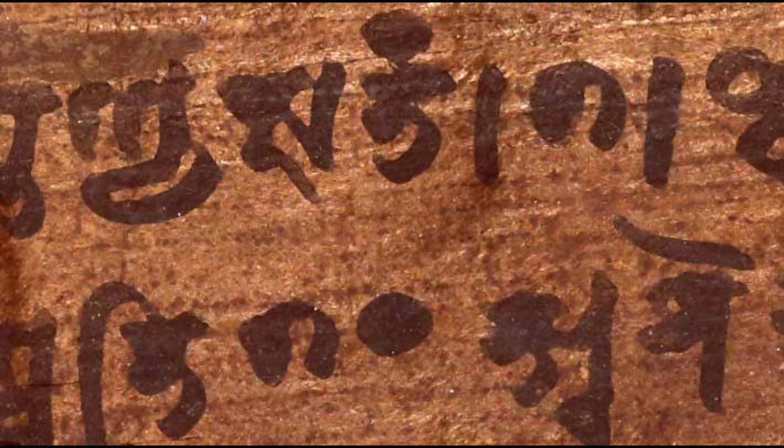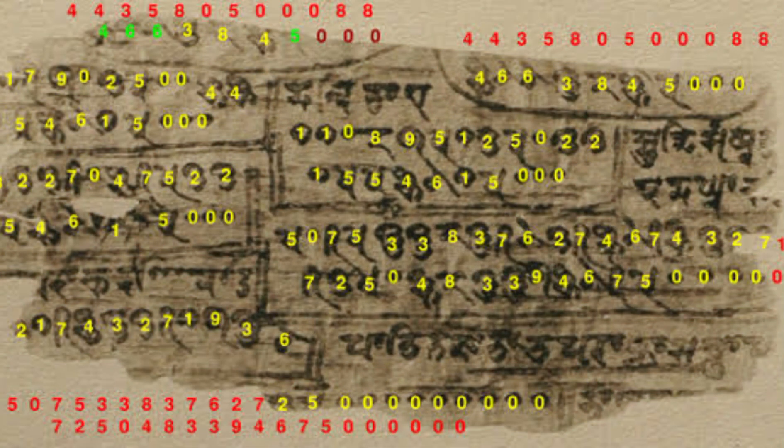The first research on the manuscript was done by A. F. R. Hoanil. After his death, it was examined by G. R. Kai, who edited the work and published it as a book in 1927.